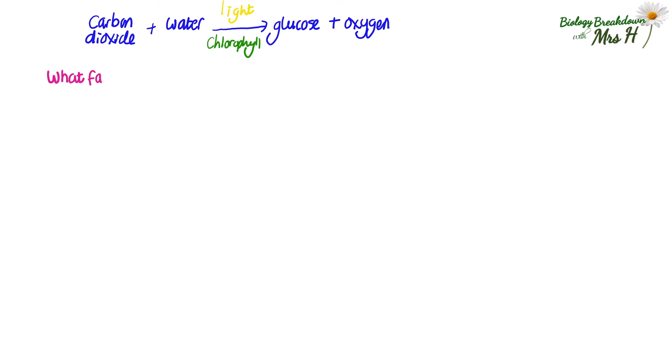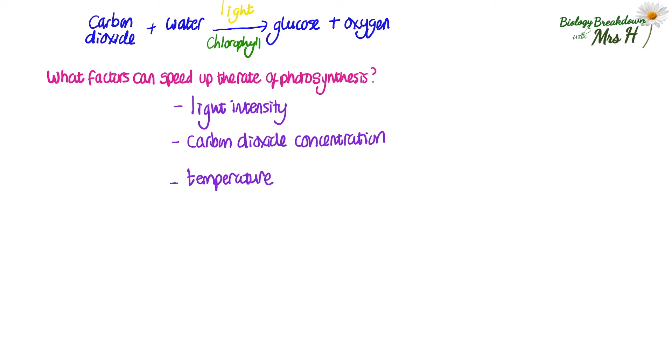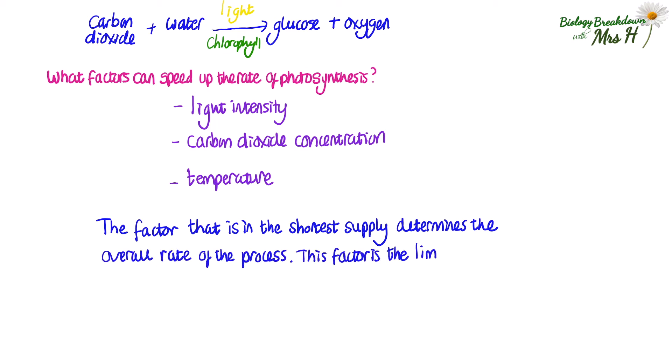There are quite a few factors that can speed up the rate of photosynthesis, but the main three the exam boards tend to focus on are light intensity, carbon dioxide concentration and temperature. How much chlorophyll there is will affect the rate, as will water availability, but they tend to just focus on these main three. Whichever factor is in the shortest supply will determine the overall rate of photosynthesis. This factor is the limiting factor.